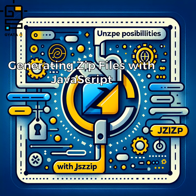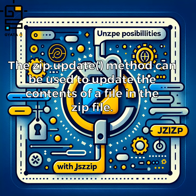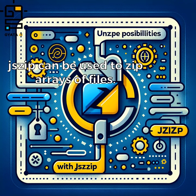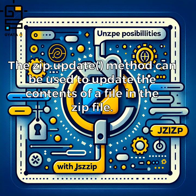Generating zip files with JavaScript: the zip.file method can be used to generate a zip file from an array of files. The zip.update method can be used to update the contents of a file in the zip file. JSZIP can also be used to zip arrays of files.